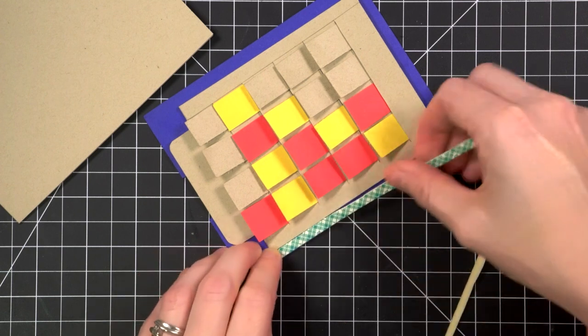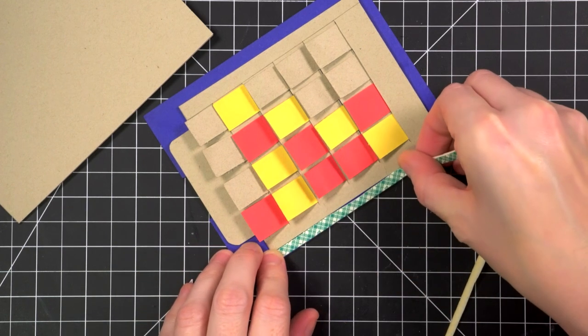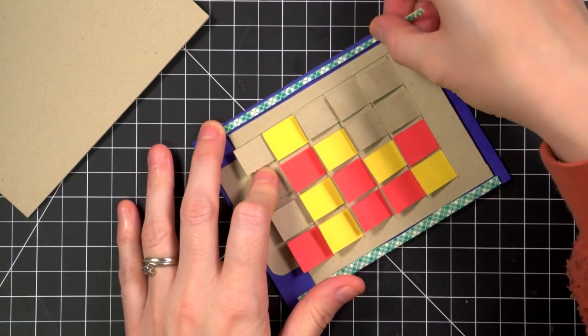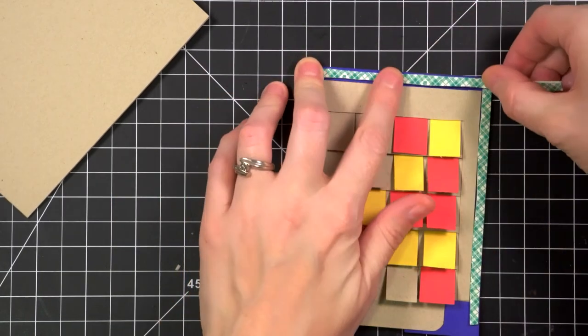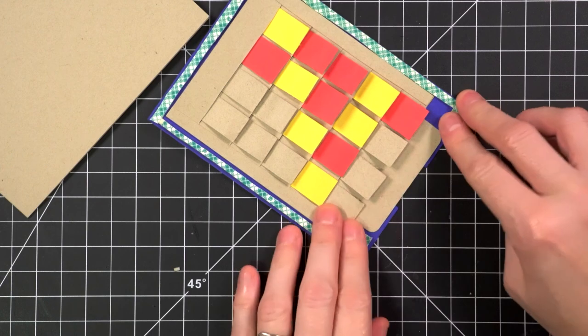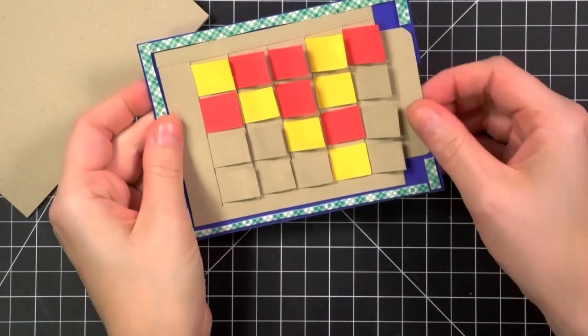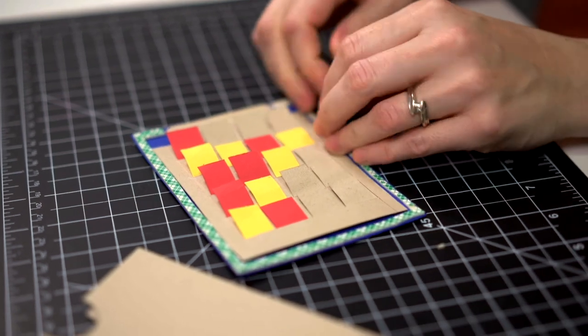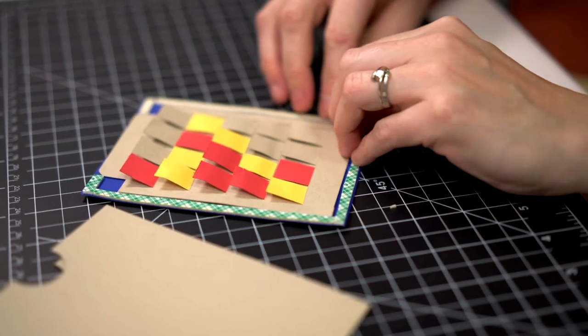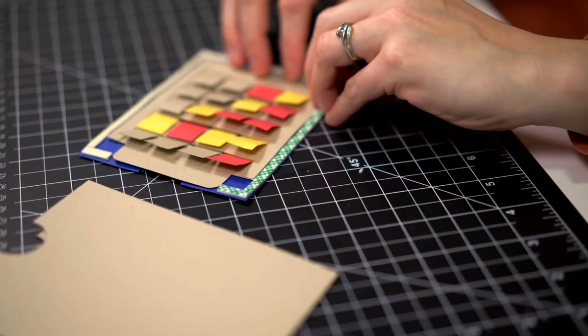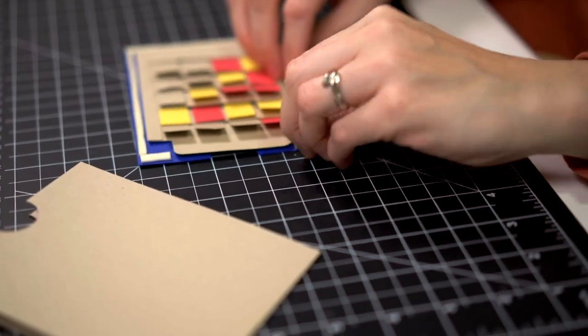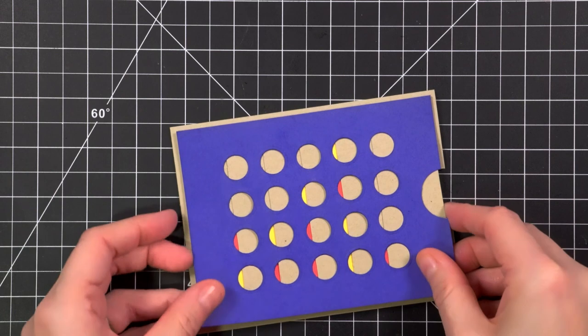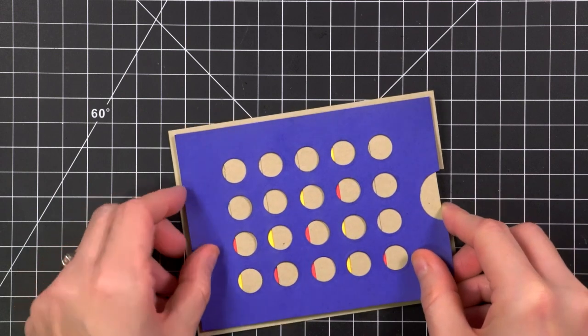I cut some thin strips of foam tape to adhere the game board to the card base. Now I'm very careful that I'm only putting it onto the blue paper and not adhering any part of the sliding mechanism. This foam tape will also act as a stopper so that those little game piece tabs do not slide out of their slits. Because that would be a complete disaster. And it'd pretty much be like threading 20 more needles all over again.